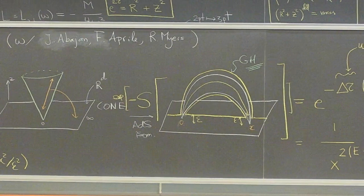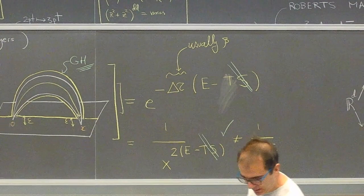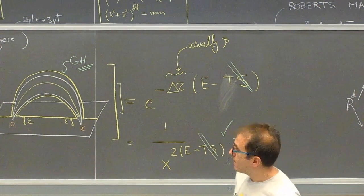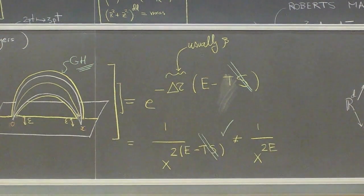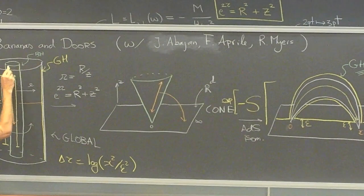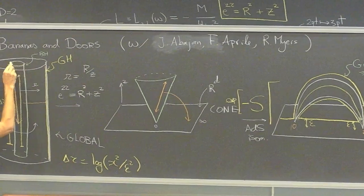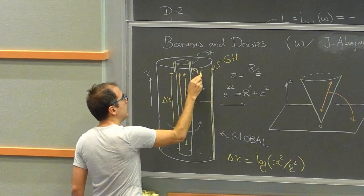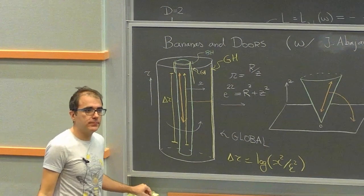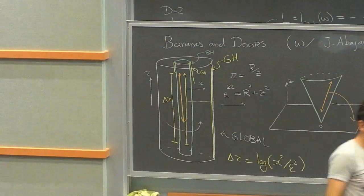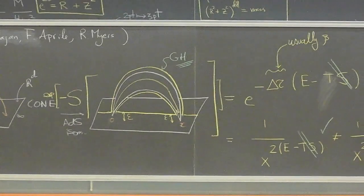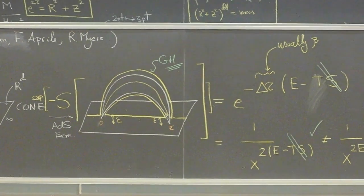Similarly, for black holes with charge we would add a boundary term to fix the charge versus the chemical potential. In the original global picture, you would place a stretched horizon and put a Gibbons-Hawking term there. With the GH term at the stretched horizon, you compute e^{−E·τ} — the energy of the state times time — without the entropy.